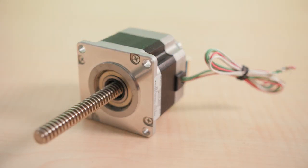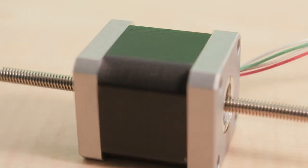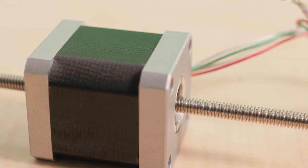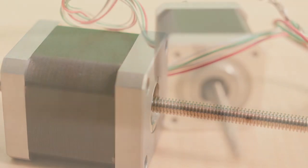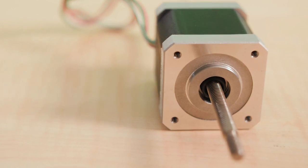These new linear actuators are highly configurable and available with a variety of imperial or metric lead screw options. They feature resolutions ranging from 0.006mm to 0.06mm per step, with an output force of up to 1,779 Newtons or 400 pounds of force.